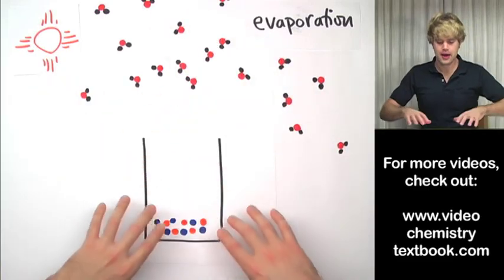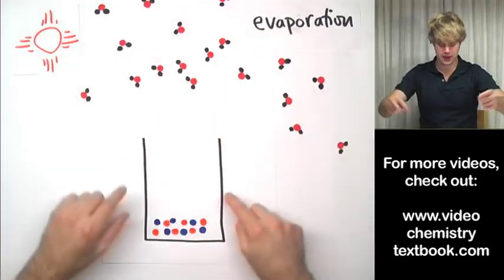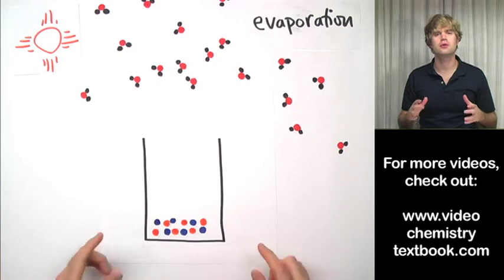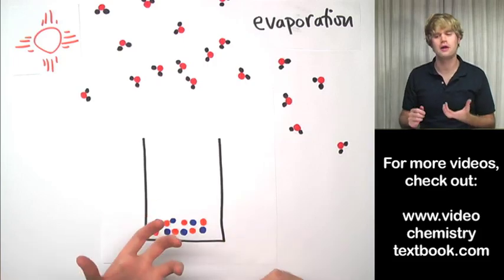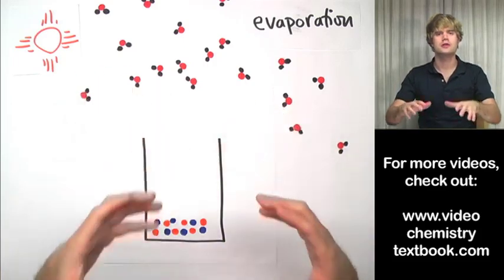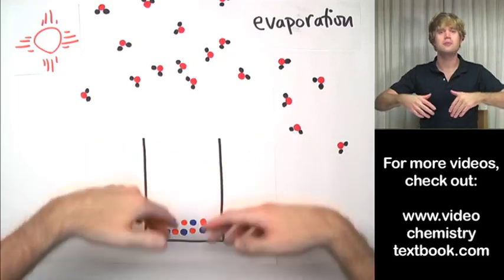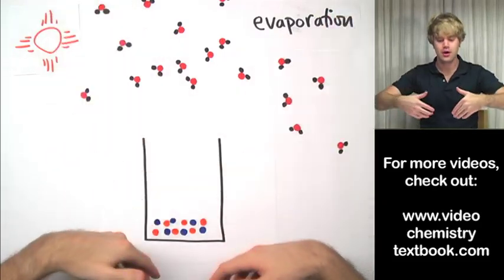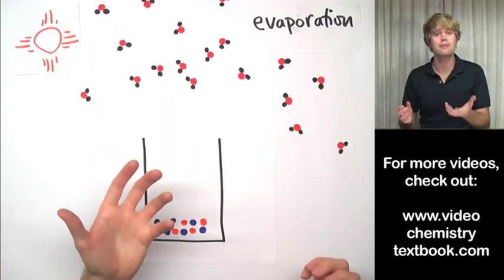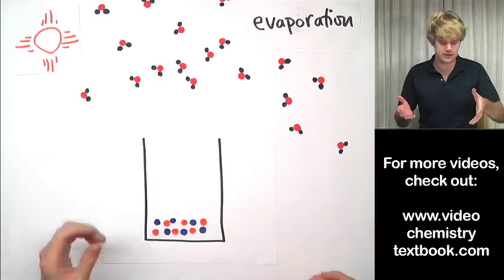Eventually, all the water molecules escape into the air as gas, and the atoms that make up the salt — the sodium chloride — are left at the bottom of the glass. Evaporation works to separate the water from the salt because water is able to evaporate. Liquid water can turn into a gas at a reasonably low temperature, like temperatures we experience every day in the sun.